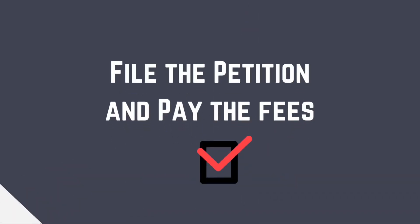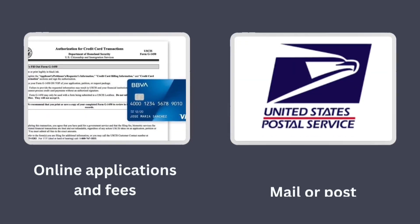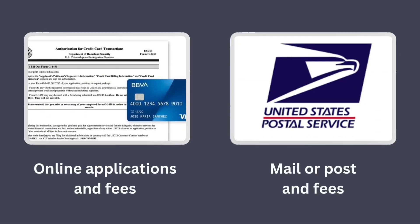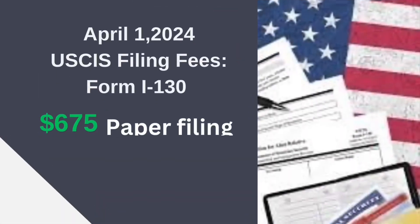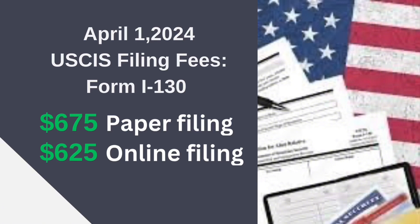Checklist number three: file the petition and pay the fee. You can submit the application by mail or online. Make sure to include the required filing fee. When I applied our I-130 application, we only paid $535 USD. But as of April 1, 2024, the fee has increased — online filing is $625 USD and mail filing is $675 USD.